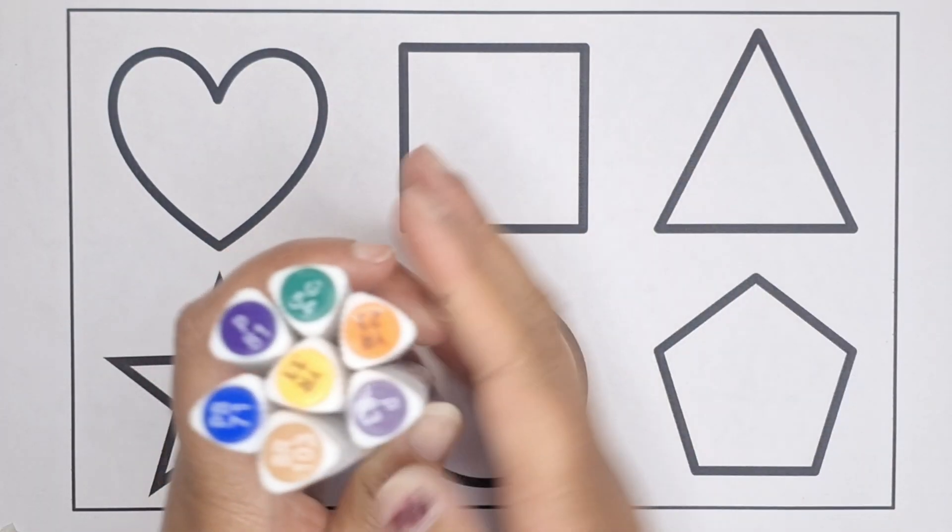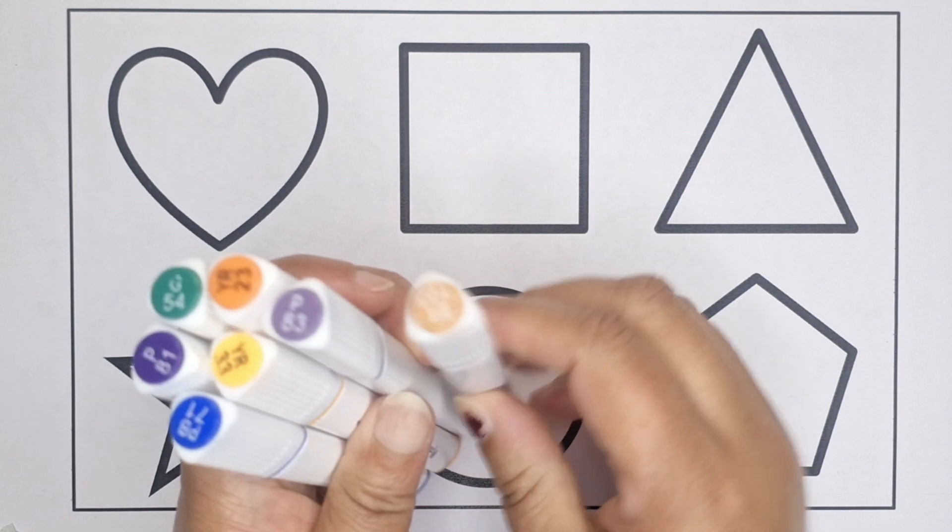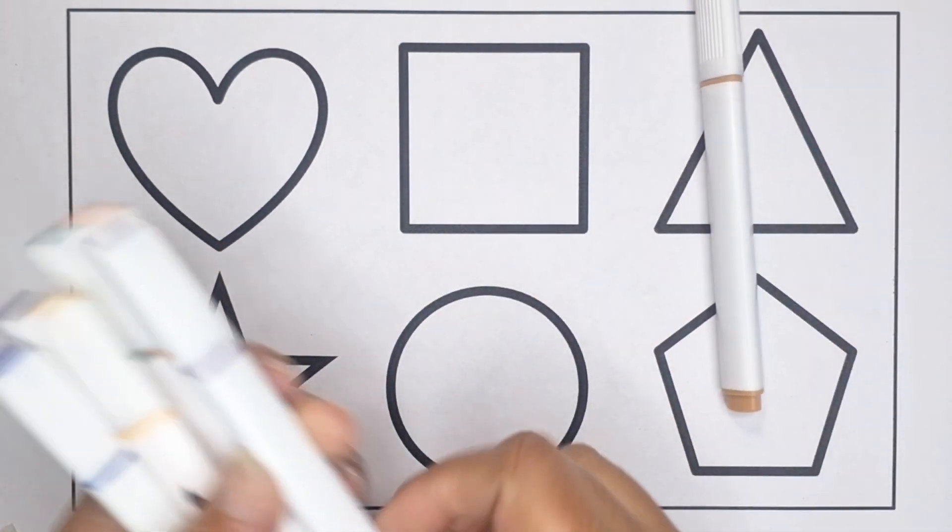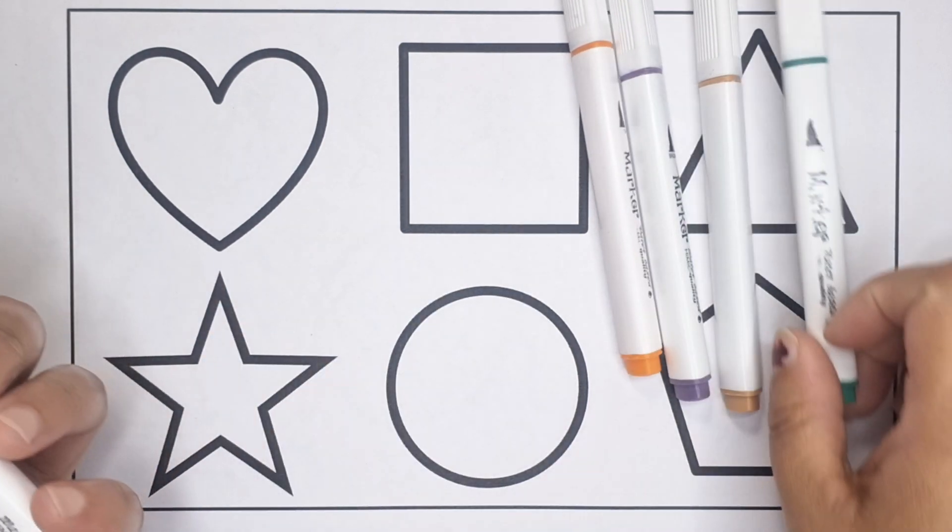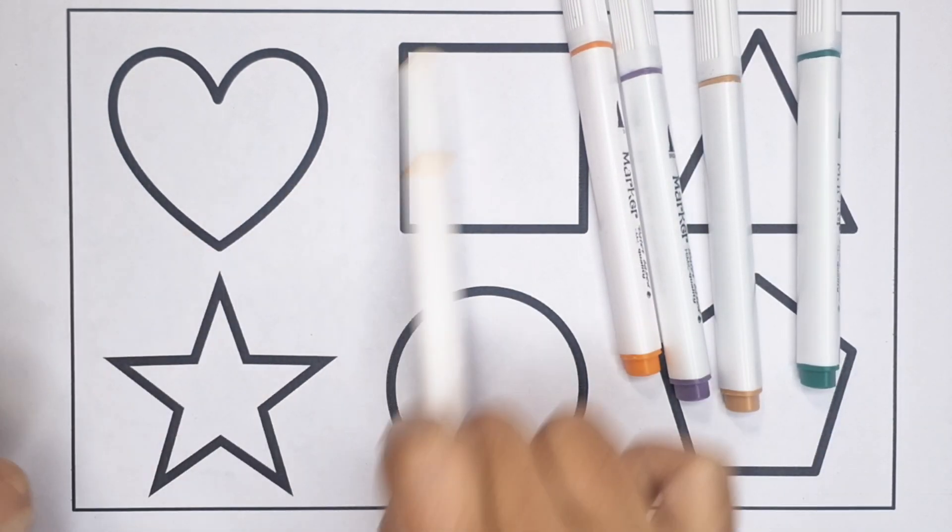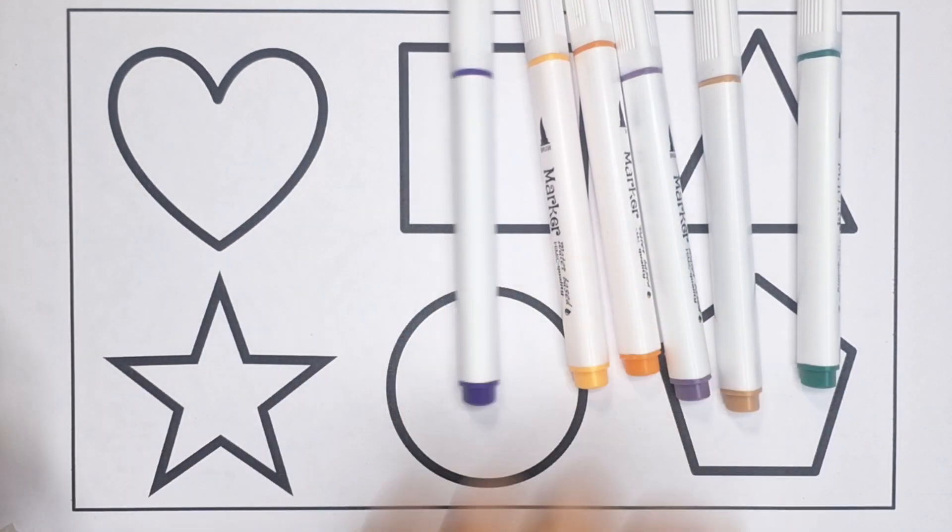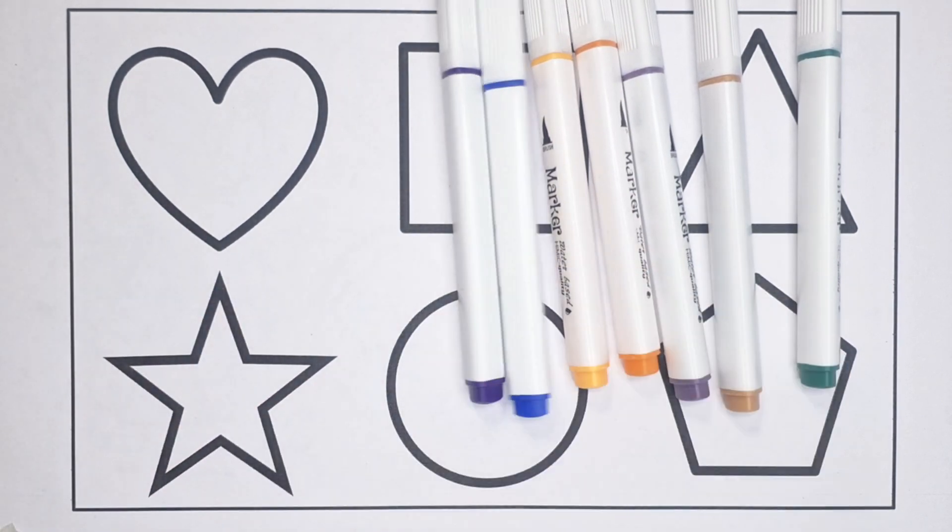Hello, let's learn some colors. Light brown color, light purple color, orange color, dark green color, yellow color, purple color, blue color.